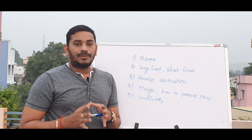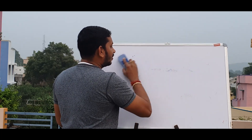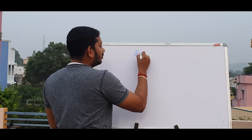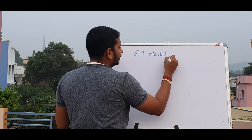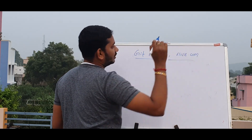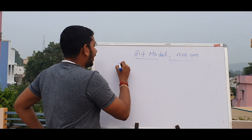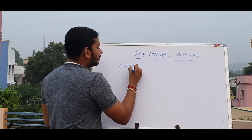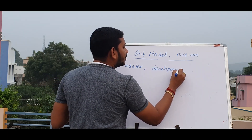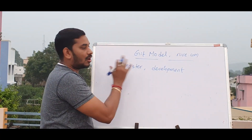We will discuss the first one — Git Flow model. Git Flow is called nvie.com. In this model, we have two long-lived branches: Master and Development. These branches exist for the lifetime of the project — you cannot delete them, that is why they are long-lived branches.